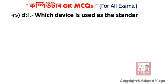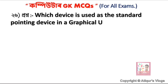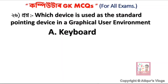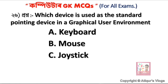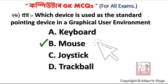Which device is used as the standard pointing device in a graphical user interface environment? Options include option A, option B Mouse, option C Joystick, and option D Trackball. The correct answer is option B — Mouse. Mouse is the standard pointing device.